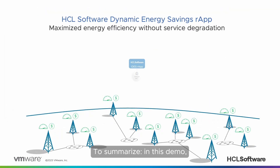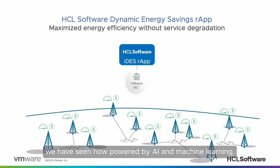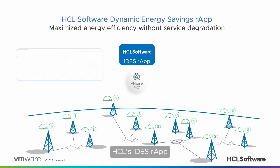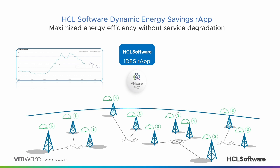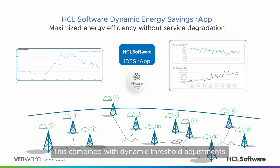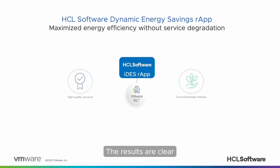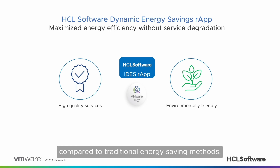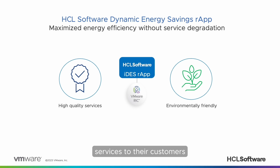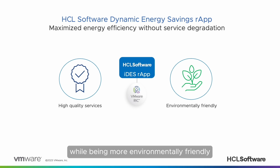To summarize, in this demo we have seen how, powered by AI and machine learning, HCL's IDES R-App is able to make accurate predictions on KQIs and use these predictions to guide its logic in maintaining the desired KQI target. This, combined with dynamic threshold adjustments, leads to significant energy savings. The results are clear: HCL Software IDES R-App, running on VMware Centralized RIC, creates a superior saving solution compared to traditional energy saving methods, allowing mobile operators to continue to provide high-quality services to their customers while being more environmentally friendly.